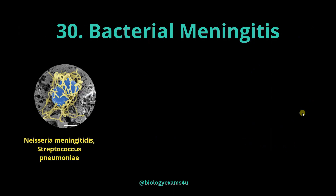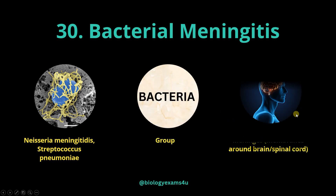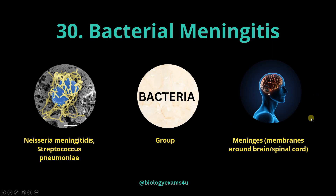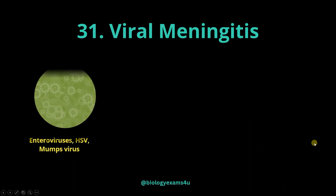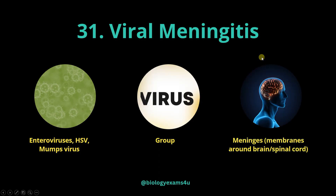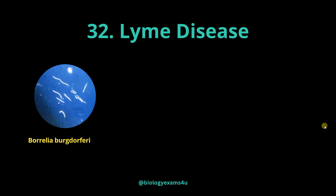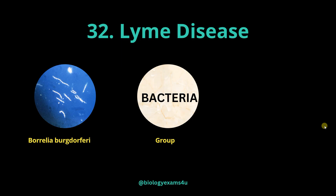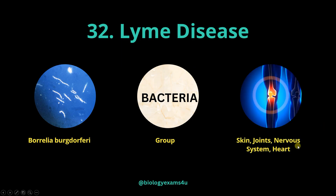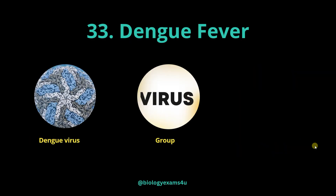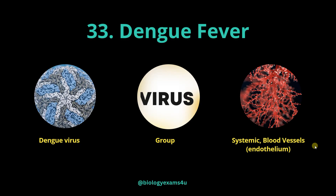Bacterial meningitis is caused by Neisseria meningitidis, Streptococcus pneumoniae, etc., belonging to bacteria, and primarily affects the meninges — the membranes around the brain and spinal cord. Viral meningitis is caused by enteroviruses, mumps virus, HSV, etc., and also primarily affects the meninges. Lyme disease is caused by Borrelia burgdorferi, a bacterium that primarily affects the skin, joints, nervous system and later the heart. Dengue fever is caused by dengue virus and affects blood vessels, causing systemic infection.